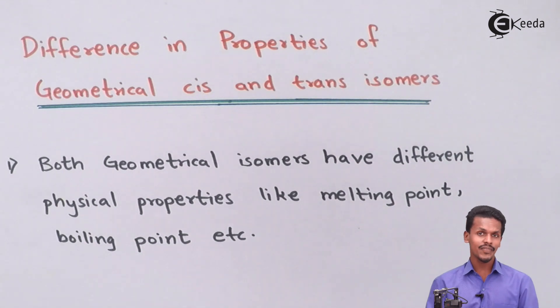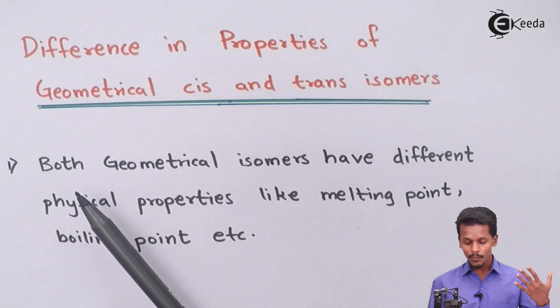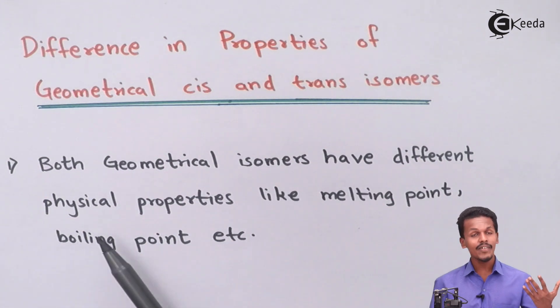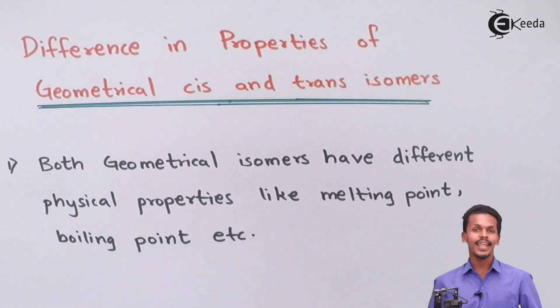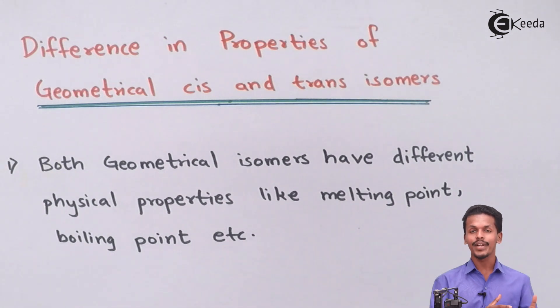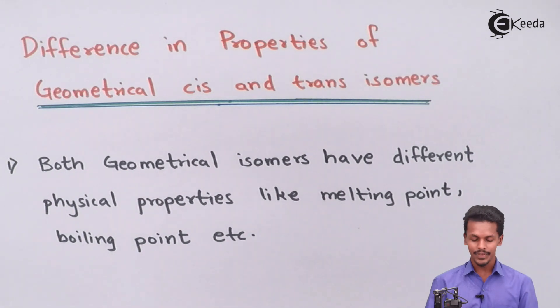The first difference between them is that both geometrical isomers have different physical properties, like melting point, boiling point, etc. Let me clarify this first point by giving an example. Suppose we have two isomers like the ones shown here.